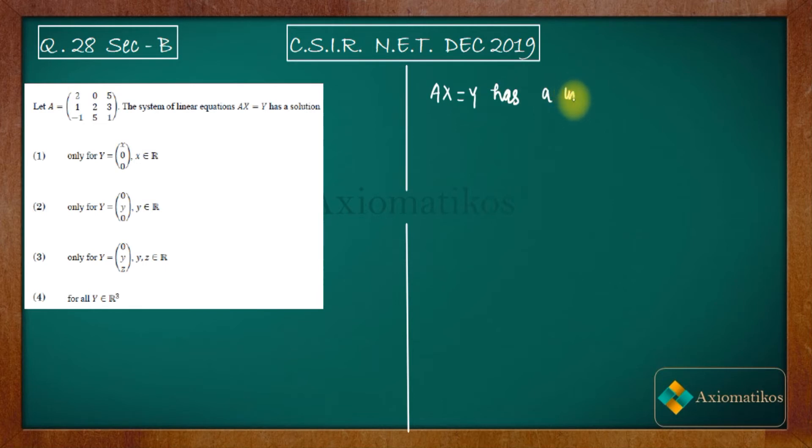then the matrix A is invertible and the solution is given by x = A^(-1)*y.